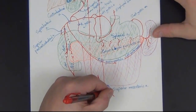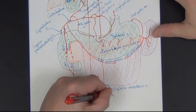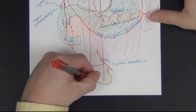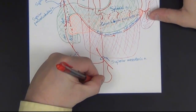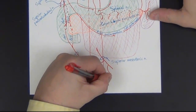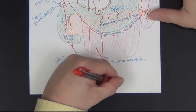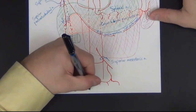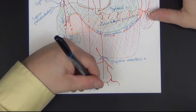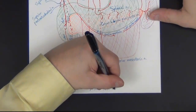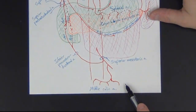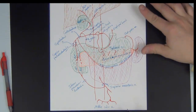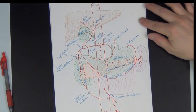Another branch off the superior mesenteric artery goes to the transverse colon — the middle colic artery. The middle colic artery is where we'll see anastomosis between the superior mesenteric and the inferior mesenteric artery, which we'll cover in the next section.